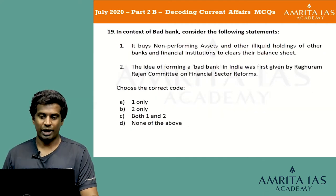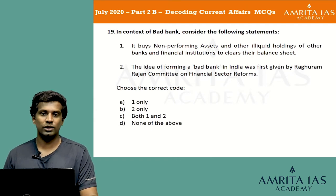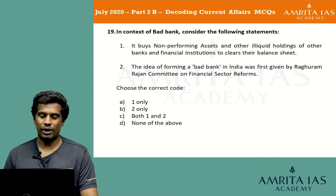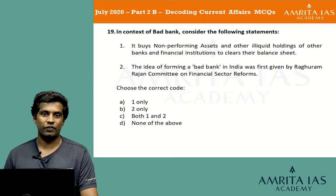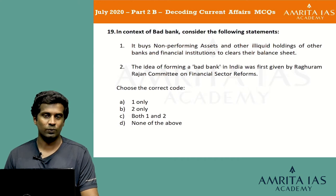In context of bad bank, consider the following statements: 1) It buys non-performing assets and other illiquid holdings of other banks and financial institutions to clear their balance sheet. 2) The idea of forming a bad bank in India was first given by the Raghuram Rajan Committee on Financial Sector Reforms. Choose the correct code: option A 1 only, option B 2 only, option C both 1 and 2, option D none of the above.